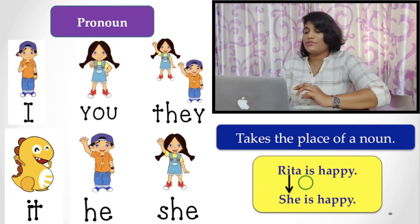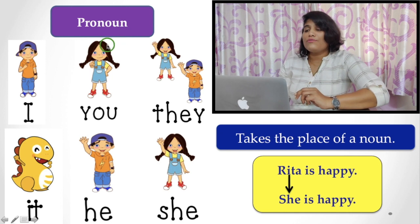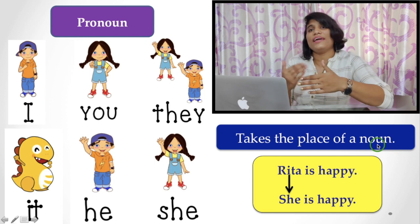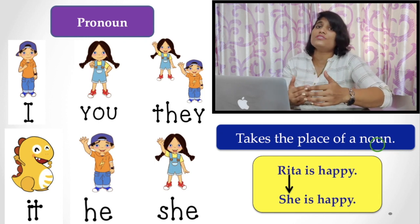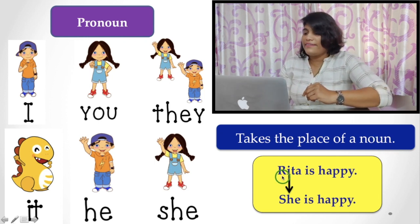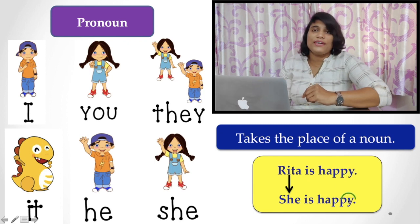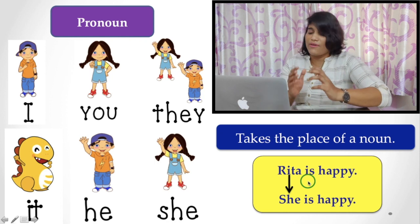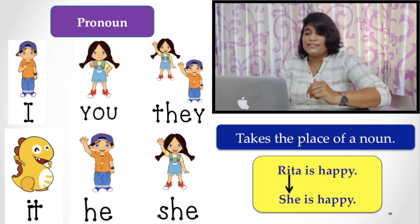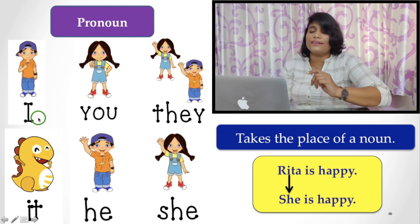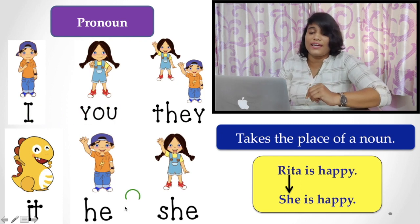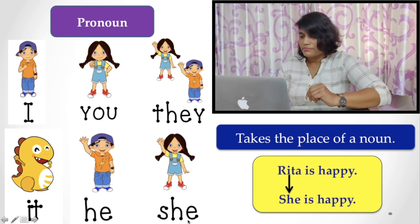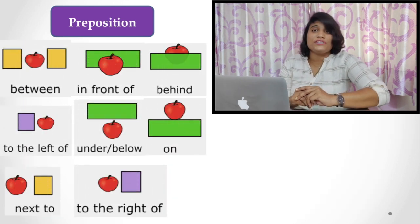Now comes to the pronoun. Pronoun takes the place of a noun. Instead of saying the name again and again, we sometimes use pronouns. That is, Rita is happy. She is happy. Here, instead of saying the name Rita again and again, you have to use she. She is a pronoun. See, lots of pronouns are here: I, you, they, it, he, she, etc.